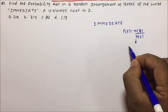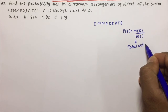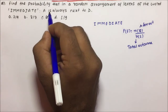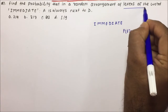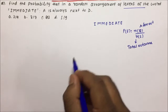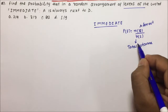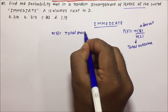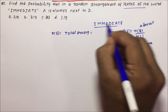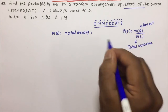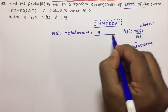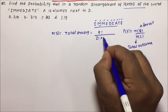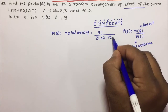The probability will be NE divided by NS, where NS is total outcomes and NE is favorable outcomes. First, let's calculate NS, which is the total arrangement. How many letters are there? 1, 2, 3, 4, 5, 6, 7, 8, 9 — so total 9. The arrangement is 9 factorial. Out of that, M is repeated 2 times, I is repeated 2 times, and E is repeated 2 times. So total arrangement NS = 9! / (2! · 2! · 2!).